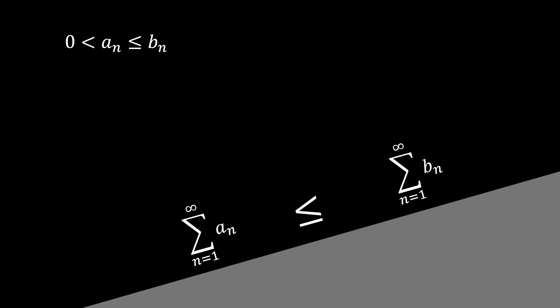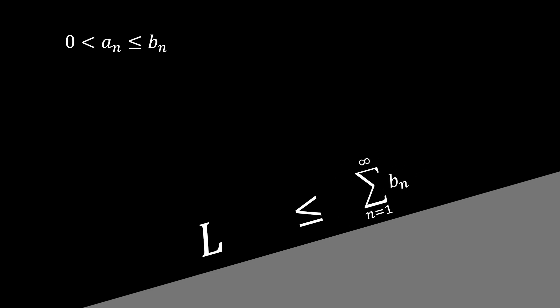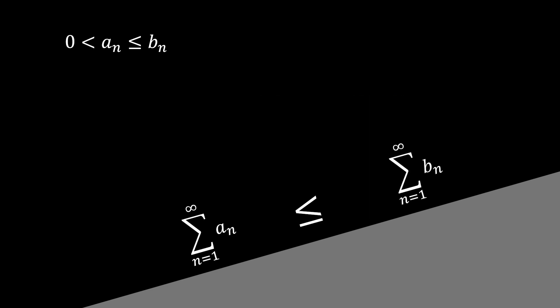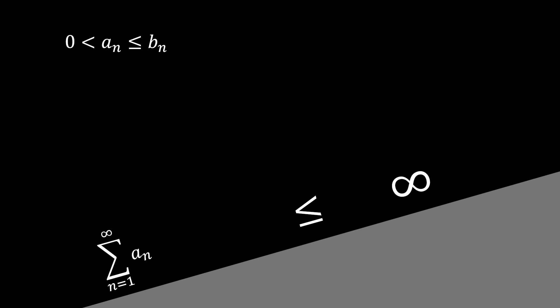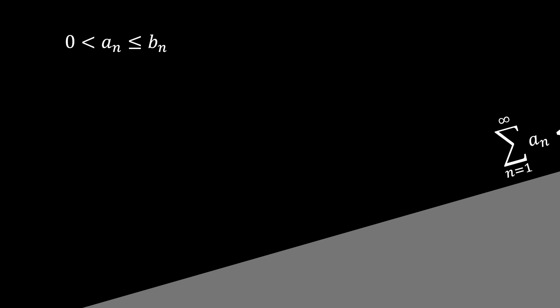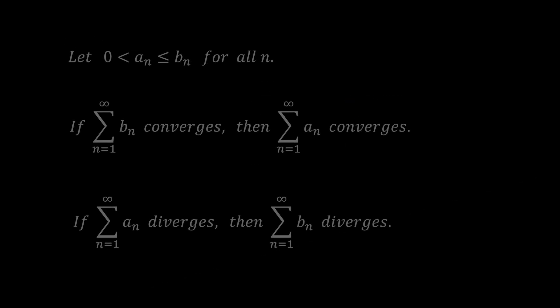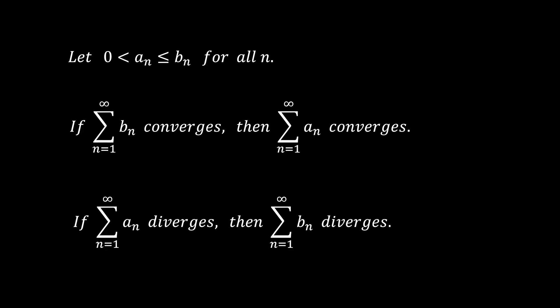When using the direct comparison test, there are two things to be cautious of. First, when the infinite sum of a_n converges to an arbitrary value l, the infinite sum of b_n could converge slightly higher than l, or it could keep climbing and diverge — so we cannot determine anything about b_n. Second, when the infinite sum of b_n diverges, the infinite sum of a_n could either converge or diverge — again, we cannot determine the outcome. In summary, to use the direct comparison test, we only need to consider whether a larger value converges or a smaller value diverges.